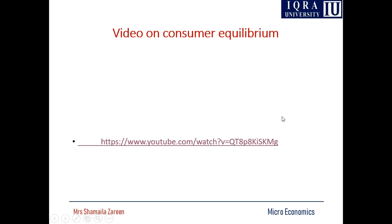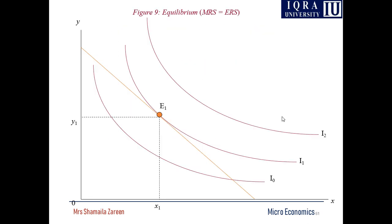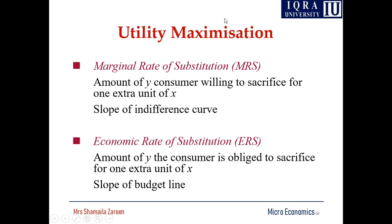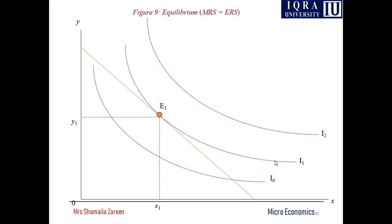In this video, consumer equilibrium has been explained: the slope of the budget line must equal the slope of the indifference curve — that was the necessary and sufficient condition. There was one specific point showing consumer equilibrium where MRS must equal ERS (economic rate of substitution). MRS is the amount of y the consumer is willing to sacrifice for one extra unit of x, and ERS — the slope of the budget line — is the amount of y the consumer is obliged to sacrifice for one extra unit of x. Whenever these two are equal, that is called consumer equilibrium.